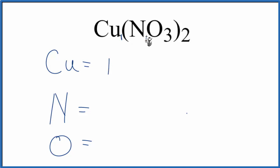Same for nitrogen. There'll be one after the nitrogen, but this 2, it's multiplied by everything in the parentheses. So we have 2 times the 1, so we have two nitrogen atoms, and then 2 times the 3, the subscript 3 for the oxygen. 2 times 3 gives us 6 oxygen atoms.